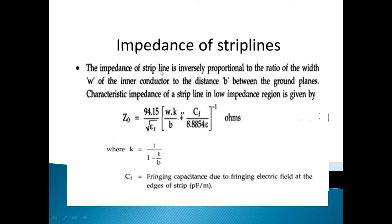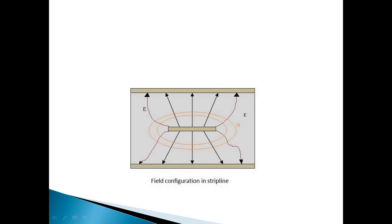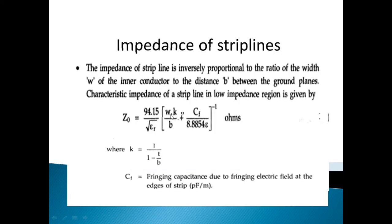The characteristic impedance of a strip line is inversely proportional to the ratio of the width of the inner conductor w to the distance b between the ground planes. The formula is: Z₀ = 94.15 / (√εᵣ · (w·k/b + Cf / 8.8854ε))⁻¹ ohms, where k = 1 / (1 − t/b), t is the strip thickness, b is the ground plane separation, and Cf is the fringing capacitance due to fringing electric fields at the edges.